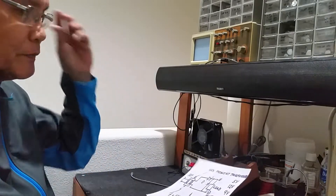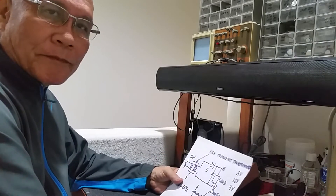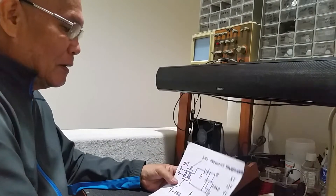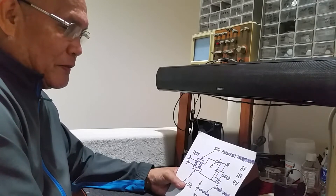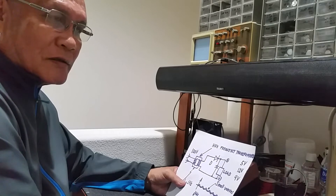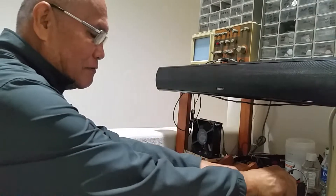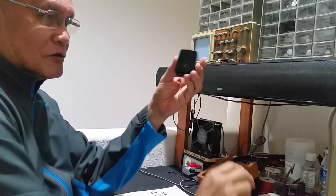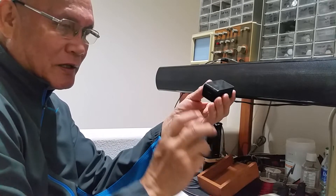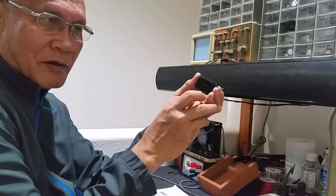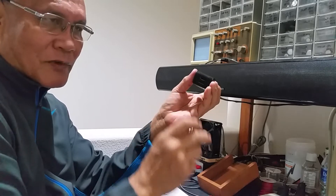Good morning, guys. This is David de los Reyes. My topic for this afternoon — it's February 10, 2022 — is the circuit of the cell phone charger, the one that's inside the cell phone charger. This is a cell phone charger or gadget charger in which the output terminal is a USB — Universal Serial Bus, something like that.